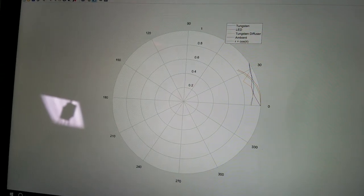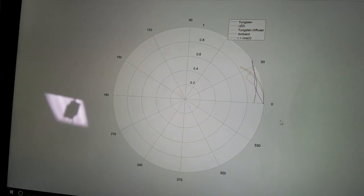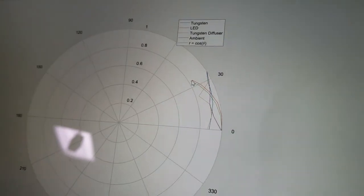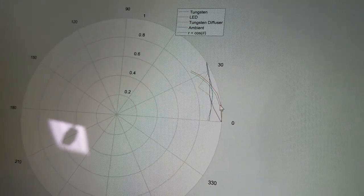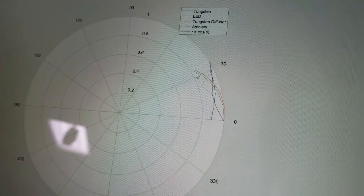So here you can see our data from our intensity measurements. The first thing you'll notice is our r cosine curve, and closely followed by that is our LED curve. This was really unexpected that the LED would be the closest to Lambertian behavior, but it was.